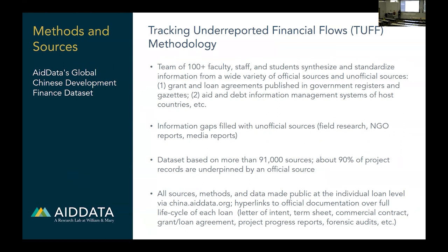Official sources include actual financing documents signed by donor and recipient countries — you can literally see the interest rate, the signature, and all the terms. We also use reports from the IMF and World Bank, and access to local media written in local languages covering stories from the recipient side. Combining all of these, we have more than 91,000 sources, and over 90% of our project records are backed by official sources.